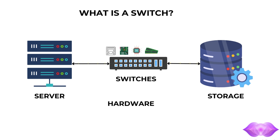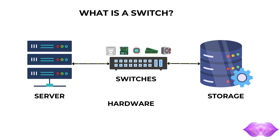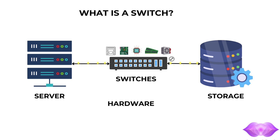The switch has internal memory to store temporary data including the forwarding table and active configurations, as well as the operating system and firmware. It also has NVRAM configuration that persists across reboots. The power supply provides power to the switch, and enterprise switches may include redundant power supplies for reliability. Built-in heatsinks prevent overheating during continuous operation — proper cooling is essential in data center environments. The backplane provides the internal communication pathway between ports. LED indicators provide visual cues for port activity, speed, power status, and errors. The management interface allows administrators to configure and monitor the switch via a console port, web interface, or CLI for remote management.